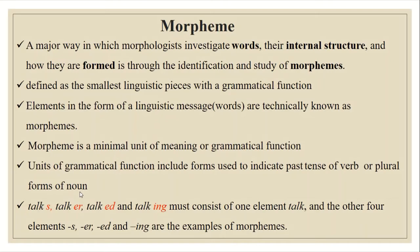Morpheme is the smallest linguistic piece with a grammatical function, and it can show the past tense of verbs or the plural forms of nouns. For example, if you take the word 'talk,' we can use several morphemes: talks, talker, talked, and talking. These all consist of the element 'talk' plus additional elements: -s, -r, -ed, and -ing. These are examples of morphemes that show plural forms of nouns and the form of verbs — called grammatical function.